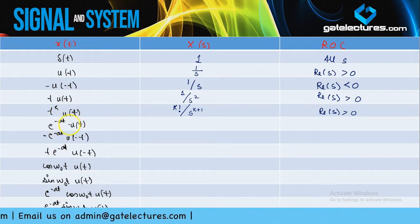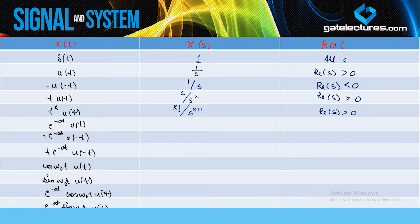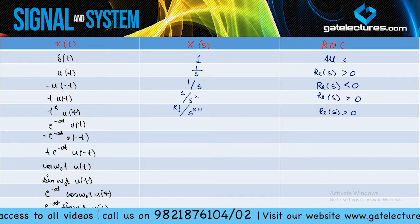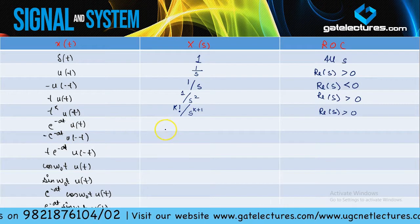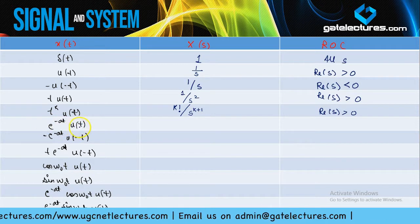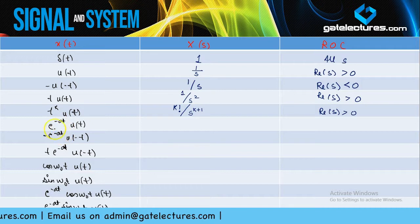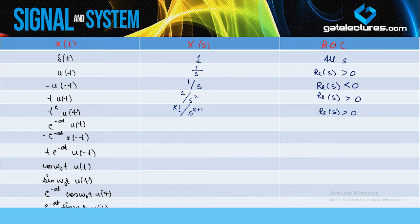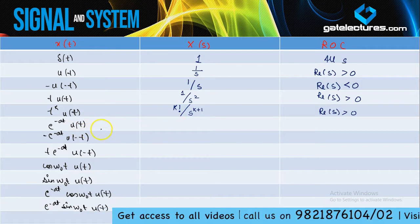Multiplication with e^(something) creates a shift in the s-domain. Multiplication with e in the time domain creates a shift in the s-domain, and conversely a shift in the time domain gives a multiplication factor of e in the s-domain. We will look at these multiplication and shifting properties in detail in the next section.